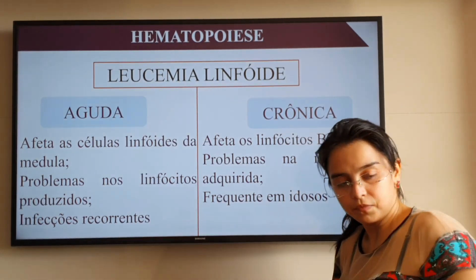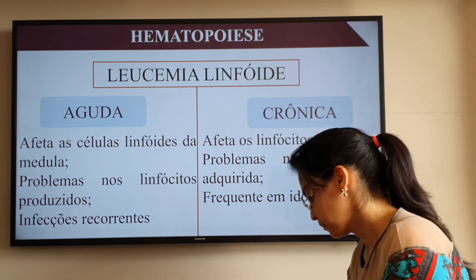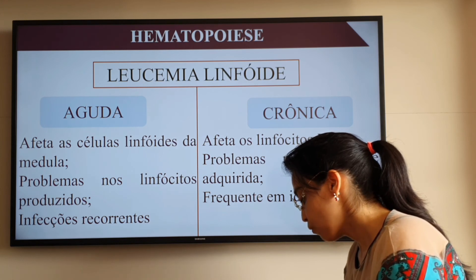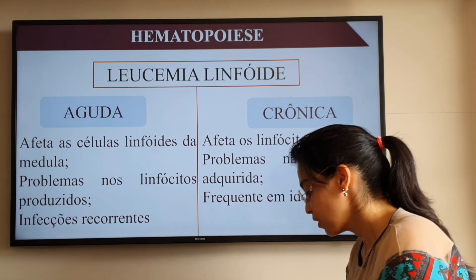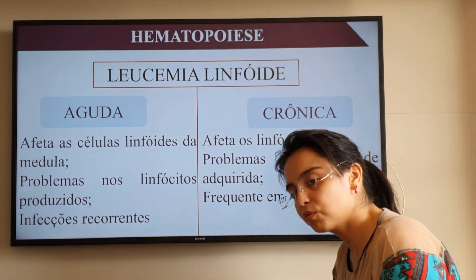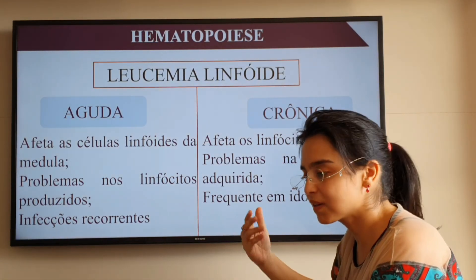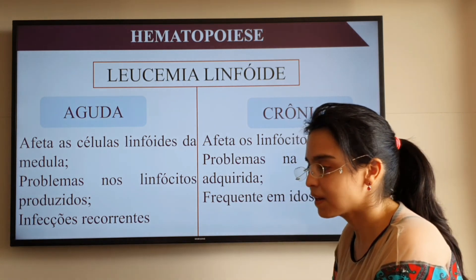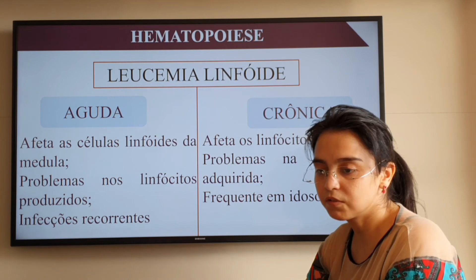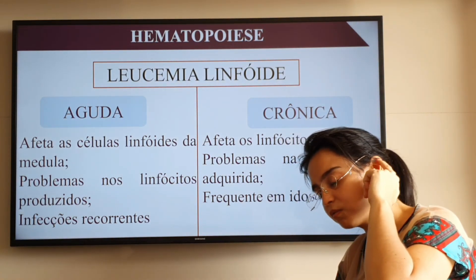O tecido hematopoético é bem simples — tem apenas essa função de sintetizar essas células. Em relação às leucemias, as formas agudas são as mais graves porque atacam todas as células de uma vez, de forma agressiva. As formas crônicas ocorrem aos poucos, ainda permitindo tratamentos como quimioterapia e radioterapia para eliminar as células defeituosas que sofreram mutação, especialmente nos idosos.